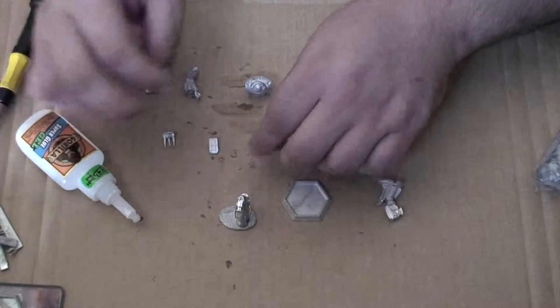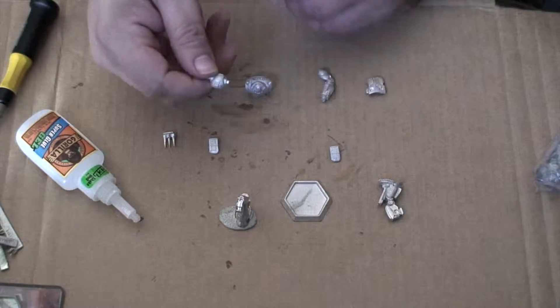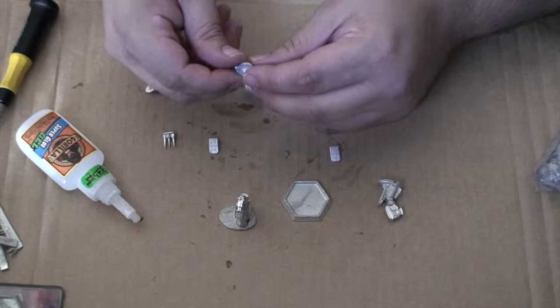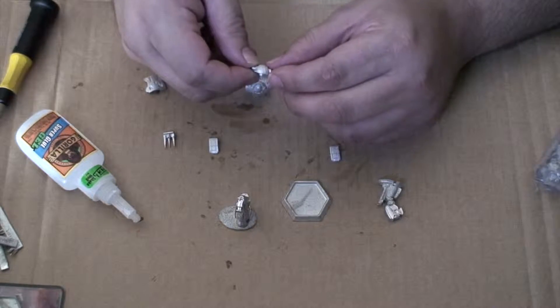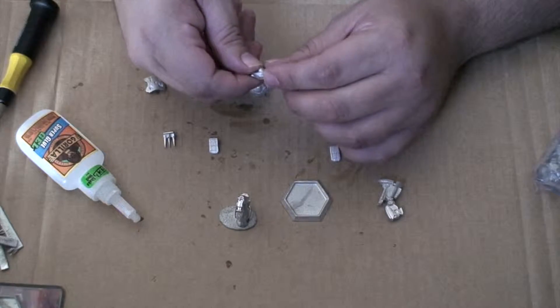Next we'll attach the hip joint. We want to make sure that this is going to go the right way and also keep the mech upright. Now you'll see that this can go both ways. This has a panel in front and then a slotted panel in back. The slotted panel is going to go towards the back.